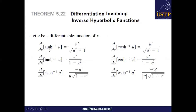The derivative of inverse sinh(u) is equal to u prime over the square root of u² plus 1. The derivative of inverse tanh(u) is equal to u prime over 1 minus u². The derivative of inverse sech(u) is equal to negative u prime over u times the square root of 1 minus u². The derivative of inverse cosh(u) is equal to u prime over the square root of u² minus 1. The derivative of inverse coth(u) is equal to u prime over 1 minus u².